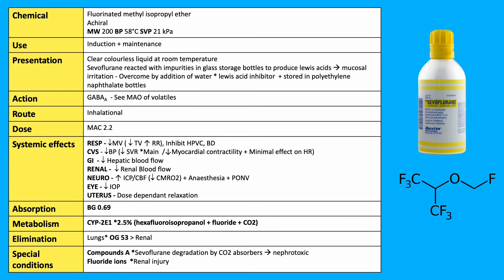GI: reduced hepatic blood flow. Renal: reduced renal blood flow. Neuro: increased ICP and cerebral blood flow, and a reduction in CMRO2. Also associated with intraoperative awareness and post-operative nausea and vomiting.